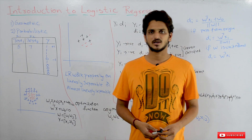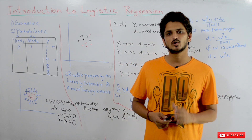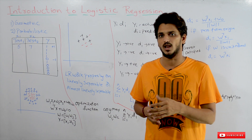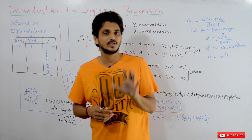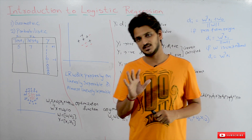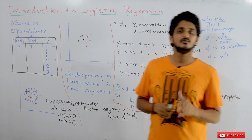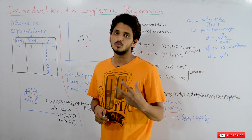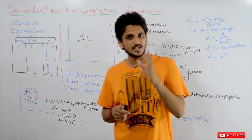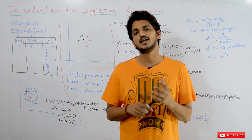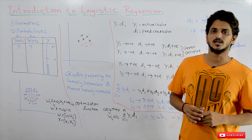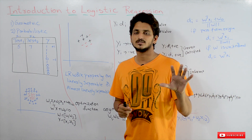Hi, welcome to Learning Monkey. I am Raghu. In this class we will discuss about logistic regression. By looking at the name, logistic regression, we think that this is a regression model — no, it's a classification model. It's a binary class classification model. We cannot do multi-class classification using logistic regression. In previous classes we discussed about KNN and Naive Bayes models; we can apply binary class and multi-class using those models, but using logistic regression we cannot apply multi-class classification.